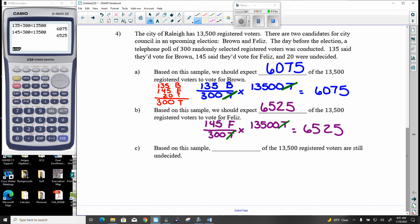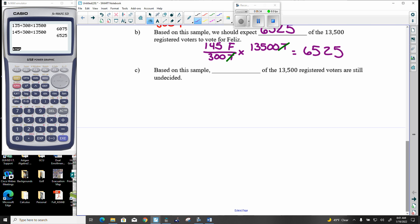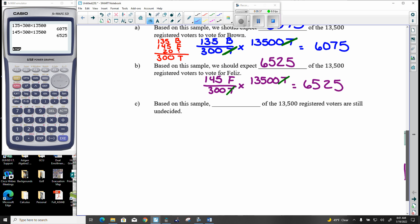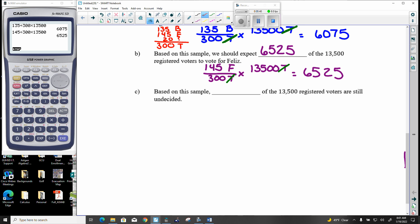One more time. So now we're looking for how many are still undecided. So that would be 20 out of 300 total. I change the total now to 13,500 and see how that proportion applies. Let's see how that works out. 20 out of the 300 times 13,500. There it is.